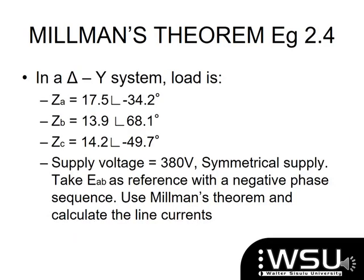Here is an example where the system is a delta supply source connected to a star load. We are given the impedance values in the star load, told that the reference point is Eab at zero degrees, and that we have a negative phase sequence. We must utilize Millman's theorem to calculate the line currents.